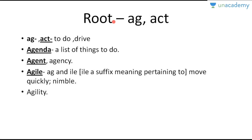Next, the root we are learning is 'ag' or 'act', meaning to do or drive. The first word we come to is agenda, which means a list of things to do. Agent and agency need not much explanation — very simple words. Agile has two blocks: 'ag' and 'ile'. 'Ile' is a suffix meaning pertaining to. So agile means to move quickly, or nimble. Agility is the next word with this root.